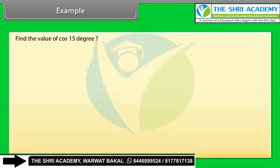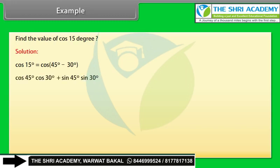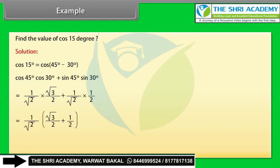Example: Find the value of cos 15°. Solution: cos 15° = cos(45° − 30°) = cos 45°·cos 30° + sin 45°·sin 30° = (1/√2)(√3/2) + (1/√2)(1/2) = (1/√2)(√3/2 + 1/2) = (√3 + 1) / (2√2).